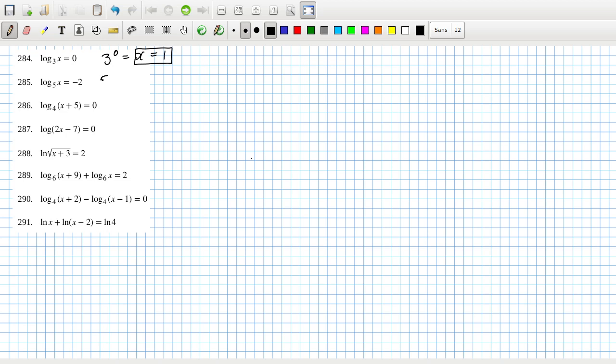And likewise this would mean 5 to the power minus 2 equals x, so that's 1 over 25. I think I have the answers here I can check in these.